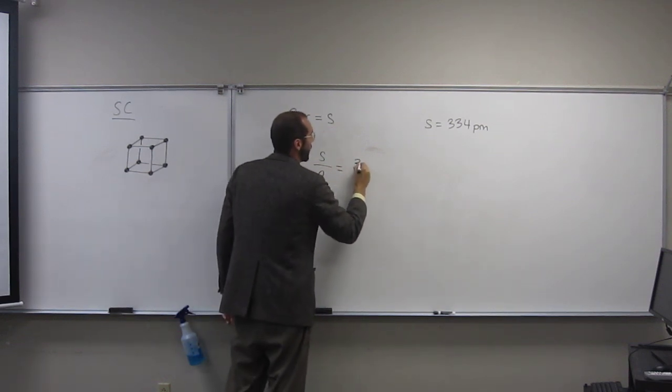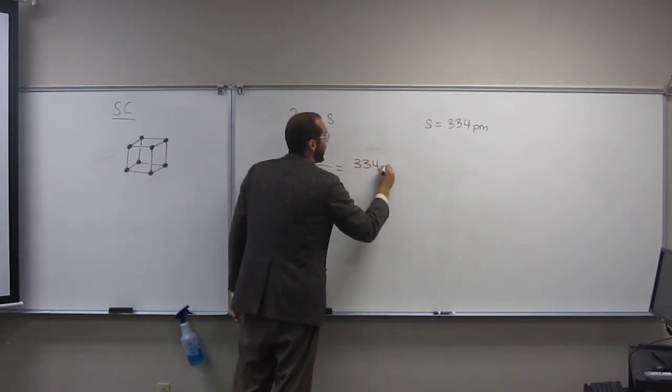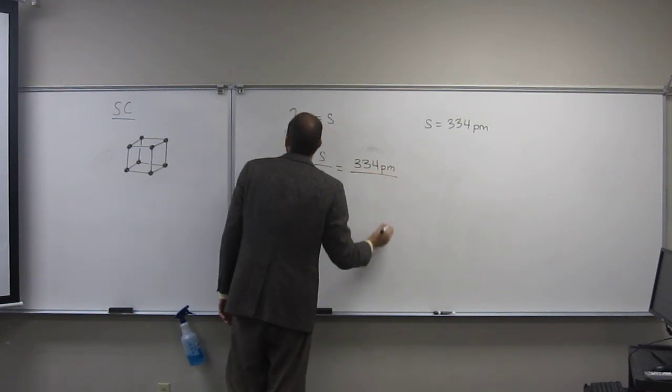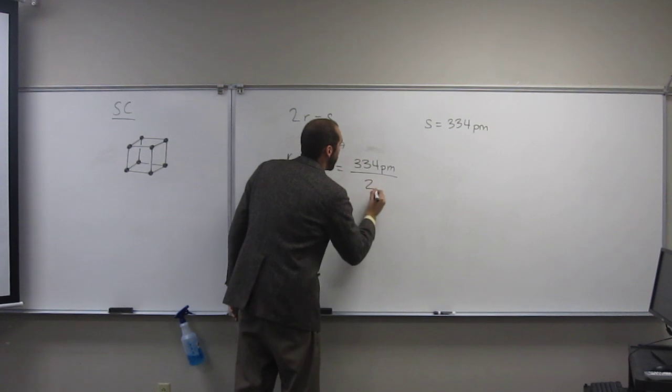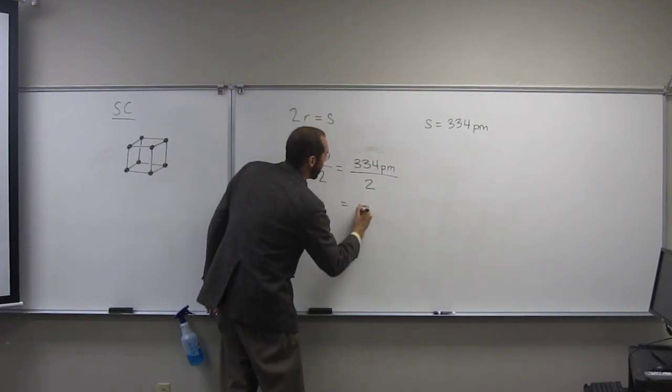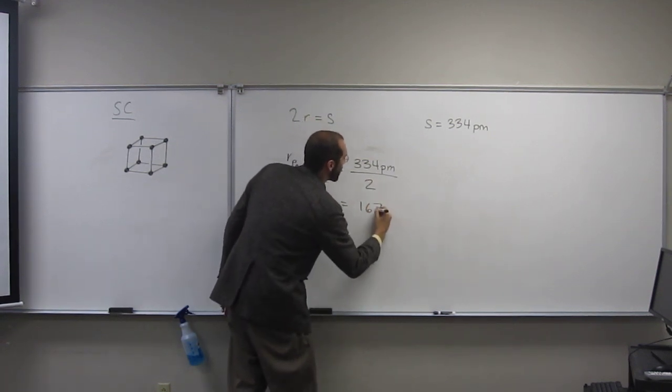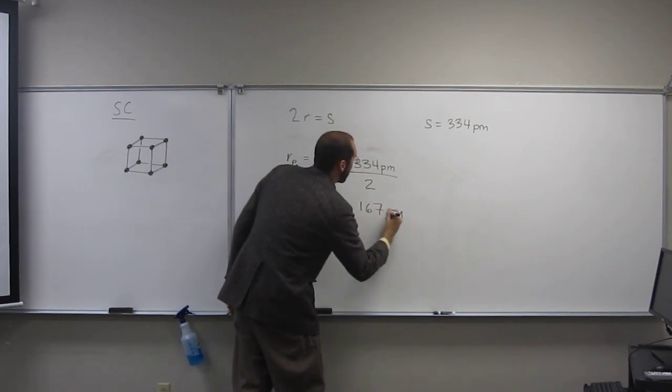So s is 334 picometers, and it wants this in picometers. So 334 divided by 2 is going to be 167 picometers.